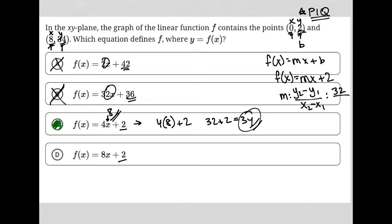And then 8 minus 0, which is 8. 32 divided by 8 is 4. So therefore, m equals 4.